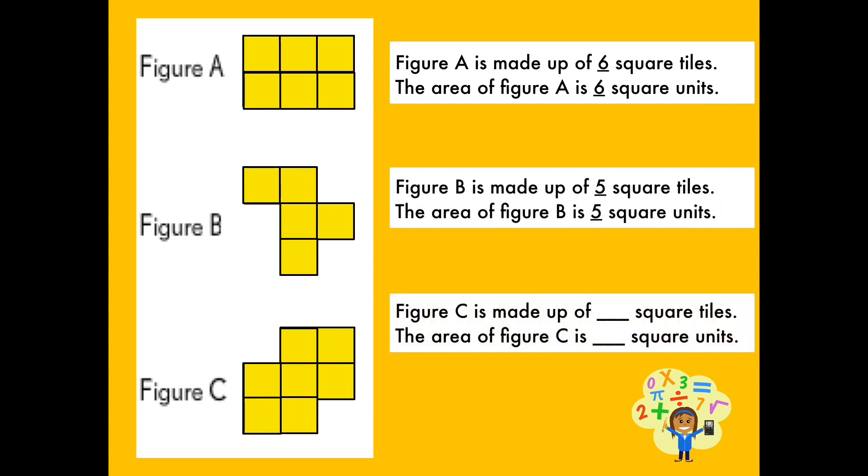How many pieces of square tiles make up figure C? Figure C is covered with seven square tiles. We can say that the area of figure C is seven square units.